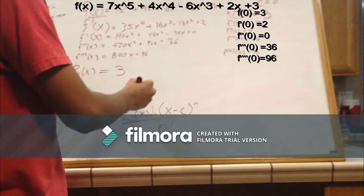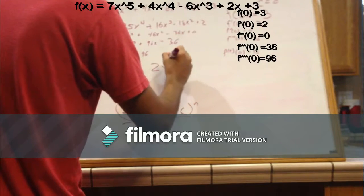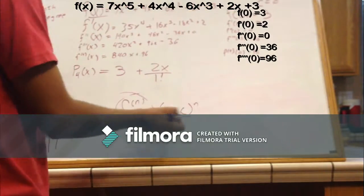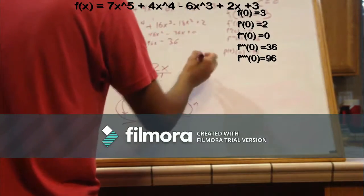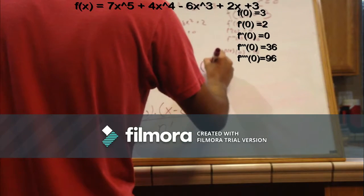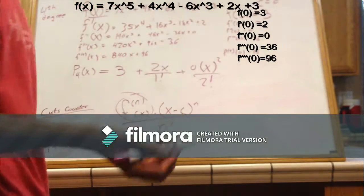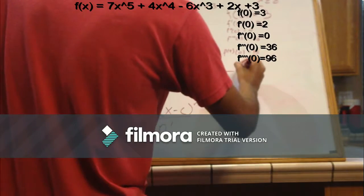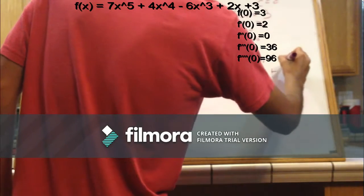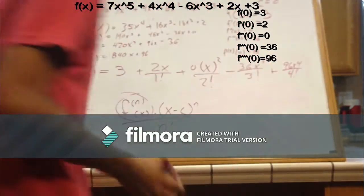Then next, we go to the first derivative, so that would be when n is one. So then we end up with two x over one factorial, because in this case, in the first derivative, n is one. After that, we go to the next one. We have a zero as our coefficient times x squared over two factorial, but this will be zero. We can see that. Next, 36 x cubed over three factorial, and finally, 96 x to the fourth over four factorial.